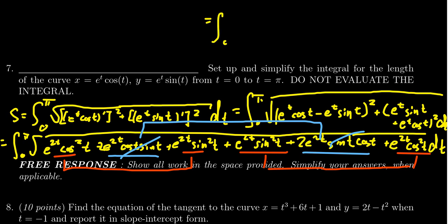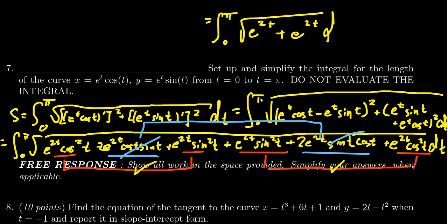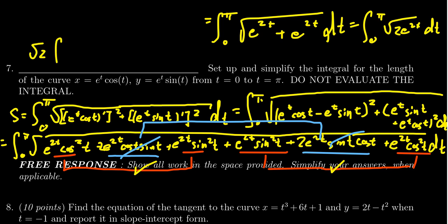When you simplify all of this, you end up with e to the 2t from the first group, and e to the 2t from the second group — the cross terms have cancelled. Combining those together inside the square root gives the square root of 2 times e to the 2t. Since e to the 2t is just e to the t squared, taking the square root yields e to the t, giving the square root of 2 times the integral from 0 to pi of e to the t dt.